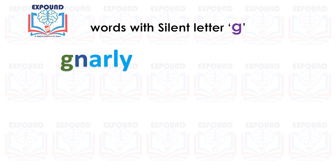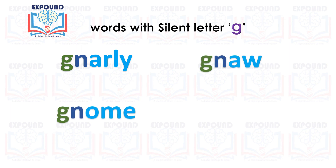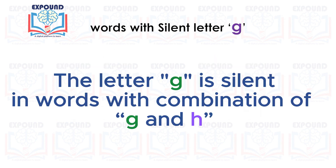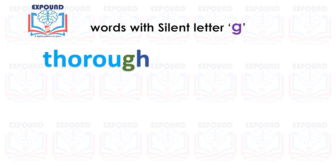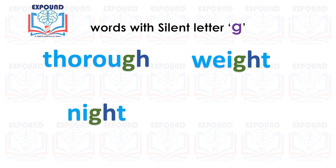Rule 2 examples: gnaw, gnome. Rule 3: The letter G is silent in words with the combination G-H: thorough, weight, night, bough.